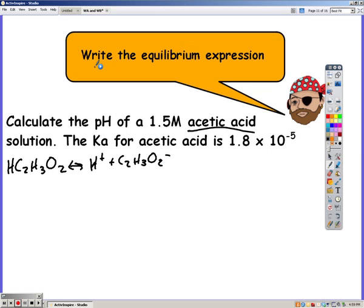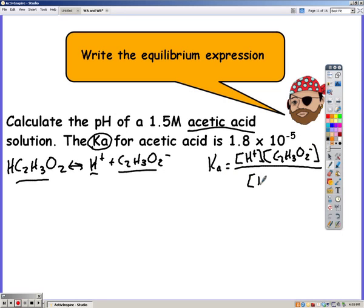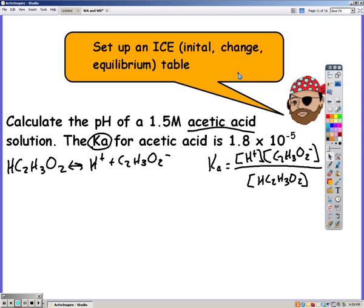Now that I've written my dissociation equation, I'm going to write the equilibrium expression. Since I have an acid, my Ka, or my equilibrium constant, is equal to my products. Make sure you put the charges on your ions. So the concentrations of my products over the concentration of my reactants. And since all the coefficients are 1, those are all to the power of 1, which will be the same for all of our problems.